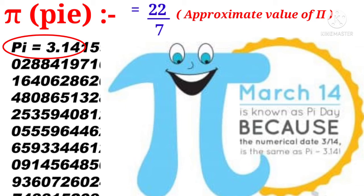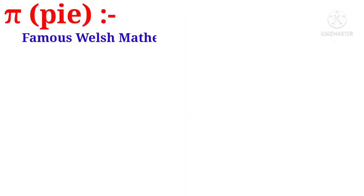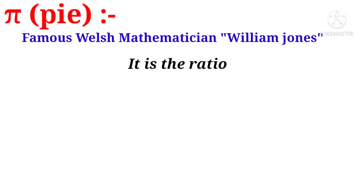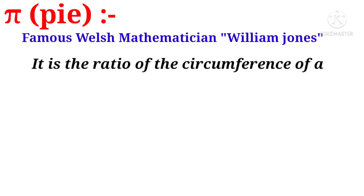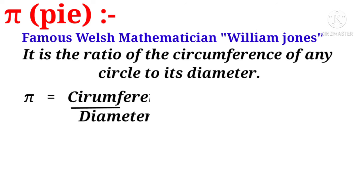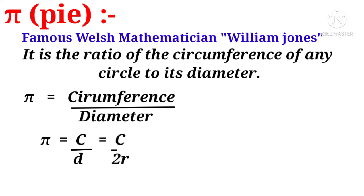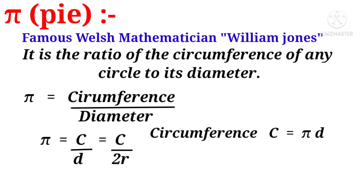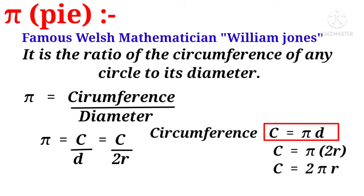Famous Welsh mathematician William Jones gave a definition to this constant pi. He said pi is the ratio of the circumference of any circle to its diameter — that is, pi equals circumference C divided by diameter d. By cross multiplication, C equals pi times d, and since d equals 2r, circumference C equals 2πr. This is the formula for the circumference of any circle.